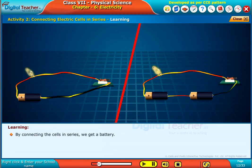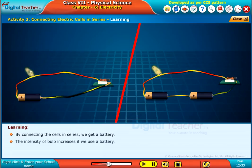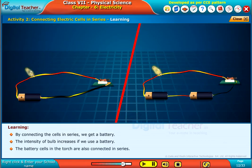By connecting the cells in series we get a battery. The intensity of bulb increases if we use a battery. The battery cells in the torch are also connected in series.